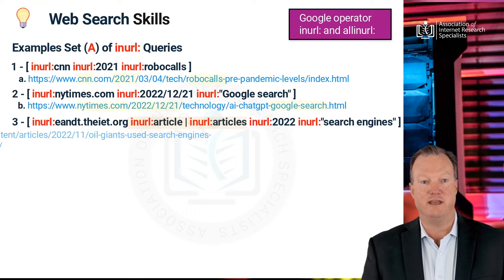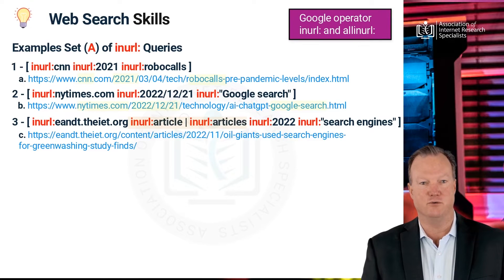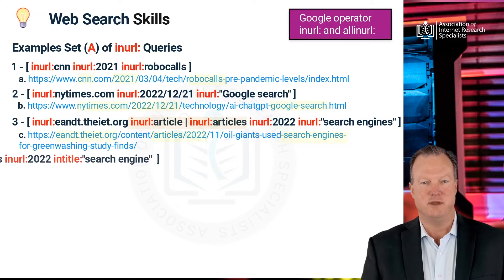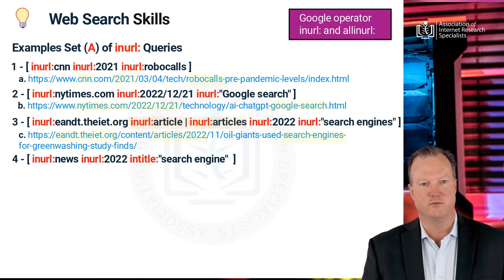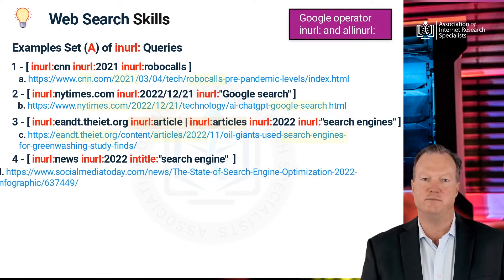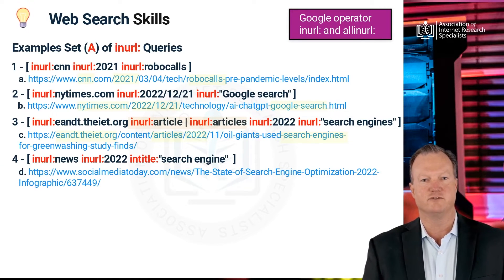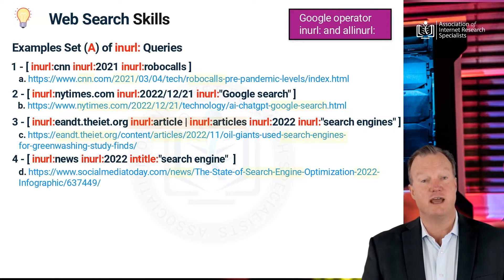The URL C is a link that brings an article titled Oil Giants Used Search Engines for Greenwashing Study Finds. Now let us move to example 4. This query is looking to get a content page from a URL that is a news source, unlike query 3 which linked to the article source. Shown in link D, the title of pages should include the word search engine, and a restrictor for the year 2022 is added to the query.